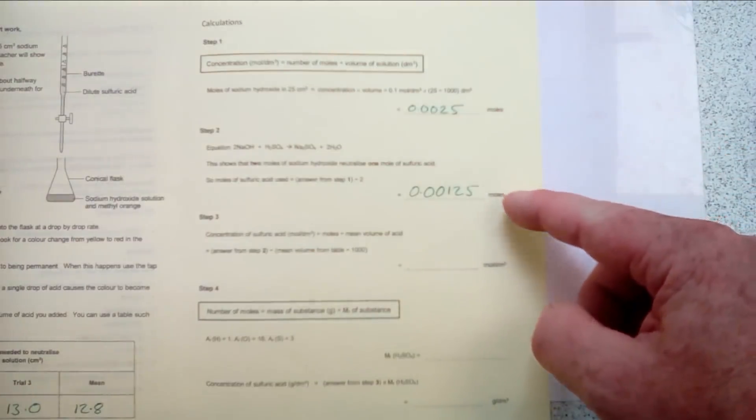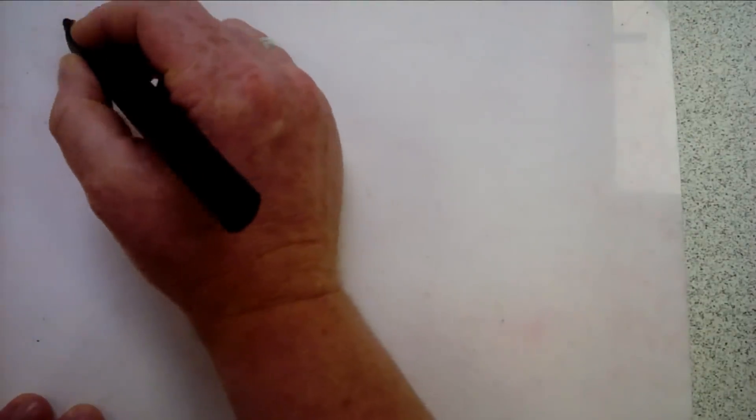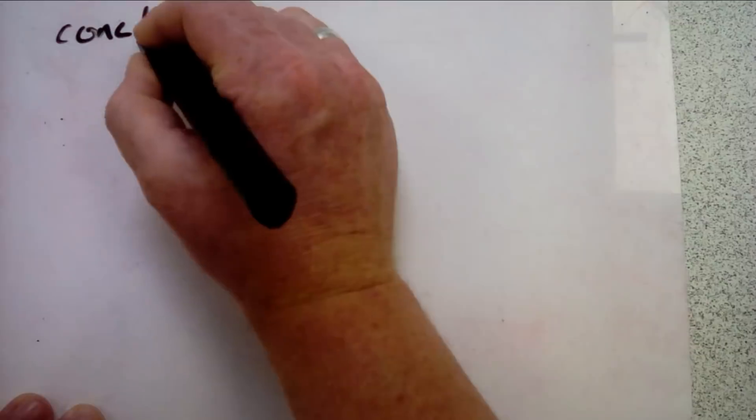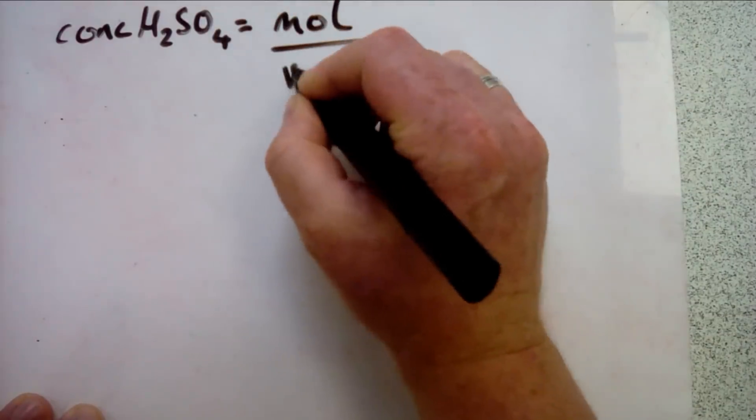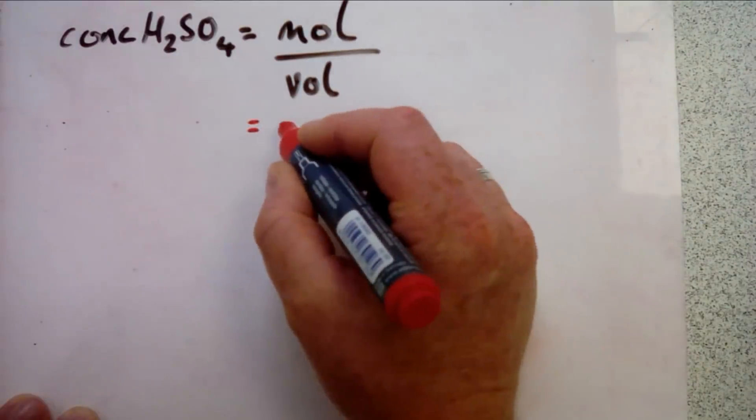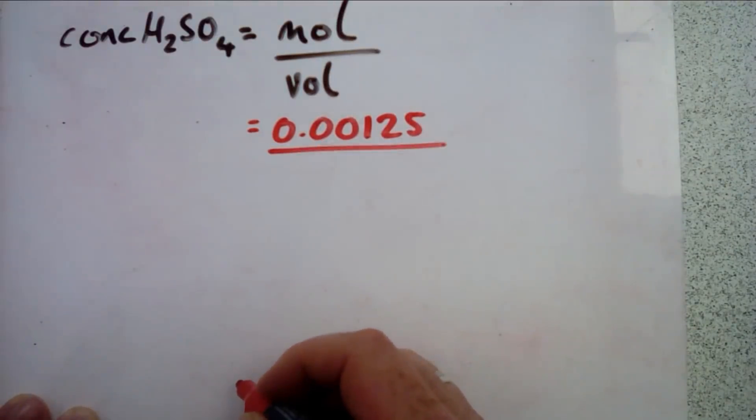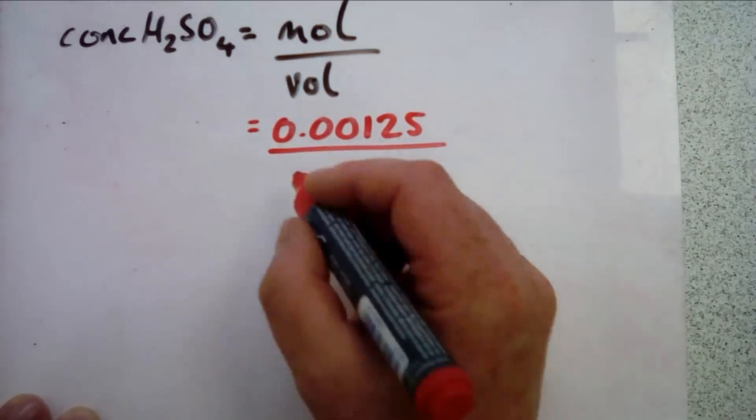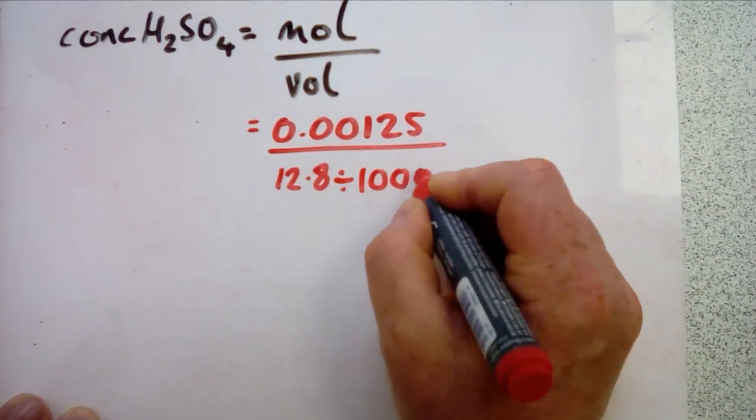If we look at our little booklet that we've downloaded, we can see that we've written those two answers in here. We're now on to step three, calculating the concentration of sulfuric acid. To calculate the concentration of sulfuric acid, we do the number of moles divided by the volume. So substituting in the numbers that we've got, we had 0.00125 moles and the volume of acid that we had comes from our results table. We had a mean volume of 12.8 centimeters cubed. We need to convert that to decimeters cubed, so again divide by a thousand.